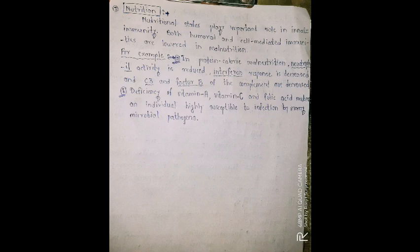For example, in malnutrition, interferon response is decreased. Interferon helps infected cells alert other cells about viral infection. Also, C3 and factor B of the complement system are decreased. The activities of these complement proteins and plasma proteins are reduced due to protein-calorie malnutrition.